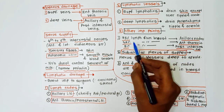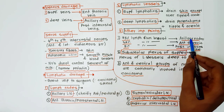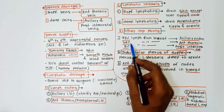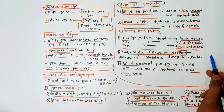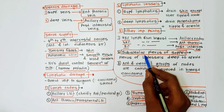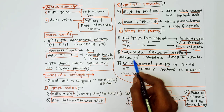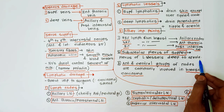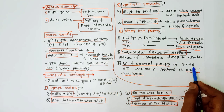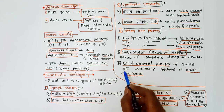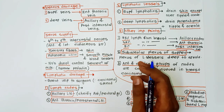Other important points: 75 percent of lymph from the breast is drained by the axillary nodes, 20 percent from the anterior thoracic nodes, and 5 percent by the posterior intercostal nodes. Next is the sub-areolar plexus of Sappey — this is the plexus of lymph vessels deep to the areola. Finally, the anterior and central groups of nodes are most commonly involved in breast carcinoma — this is also an important point.